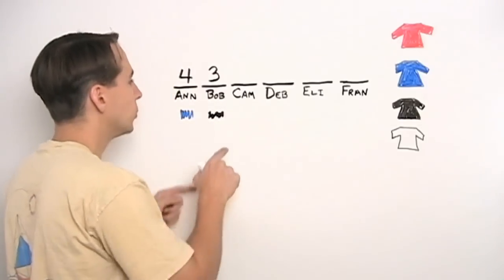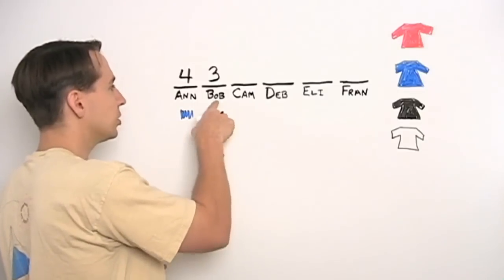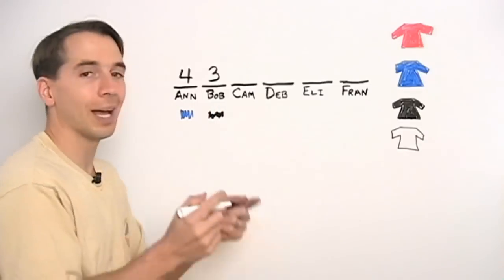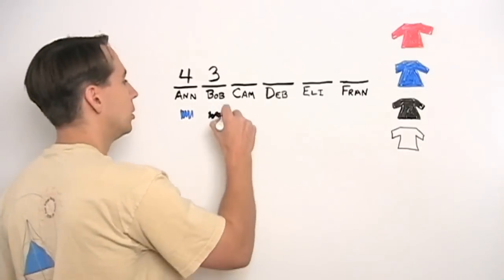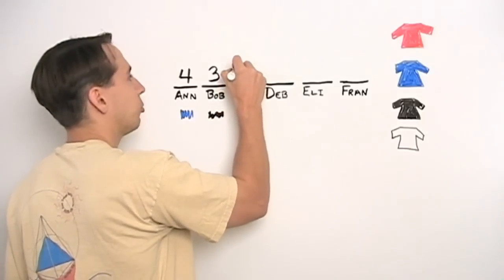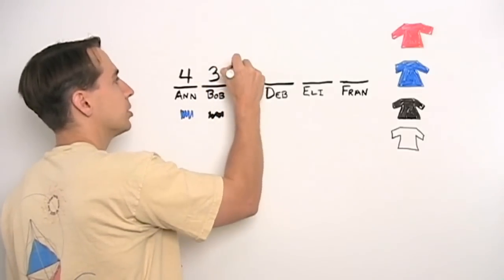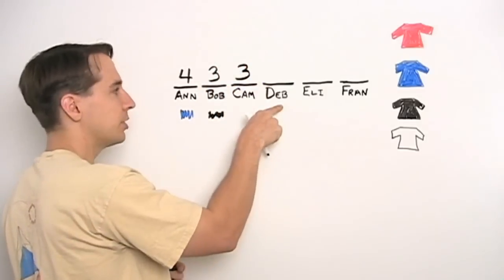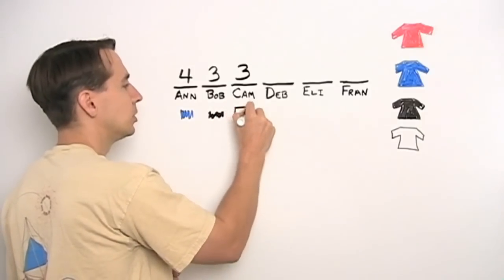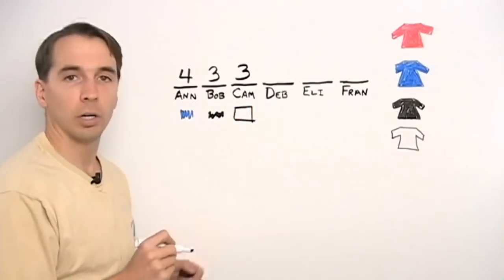Now we look at Cam. Well, Cam, she has to look at Bob and say, well, Bob's wearing black, I can't wear black. So Cam has three choices because Bob is her only restriction. We're not worried about Deb yet. Say she chooses white. Then along comes Deb.